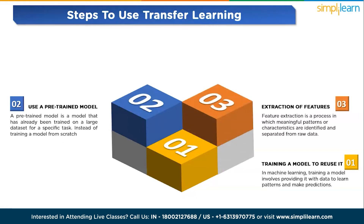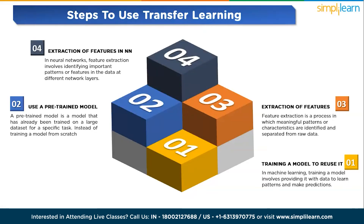The third step is feature extraction — a process in which meaningful patterns and characteristics are identified and separated from raw data. In machine learning, it involves identifying relevant information from input data for better prediction. The fourth step is feature extraction in neural networks specifically, where important patterns are identified at different network layers. Early layers typically capture simple features like edges, while deeper layers capture more complex features. This hierarchical representation enables neural networks to learn and generalize from data effectively.